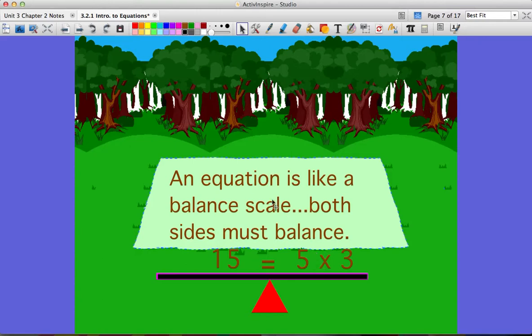I could also change the 5 times 3 and maybe put 5 plus 10. That would equal 15. Or 9 plus 6. So there's lots of different options, but you want to make sure that what's on one side is equal to what's on the other side.